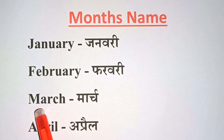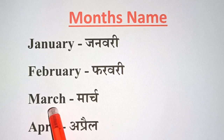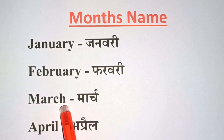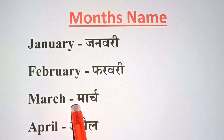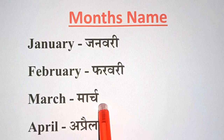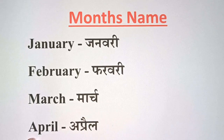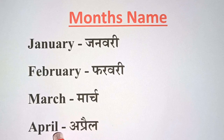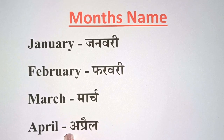M-A-R-C-H. March. March means March. A-P-R-I-L. April. April means April.